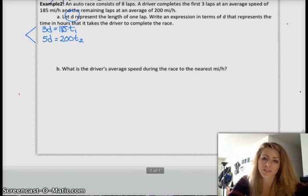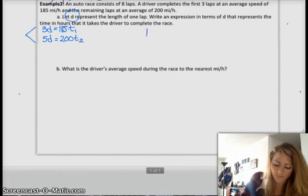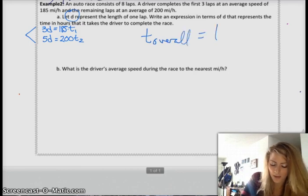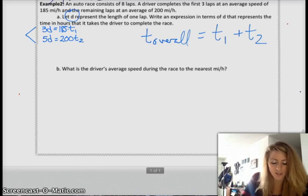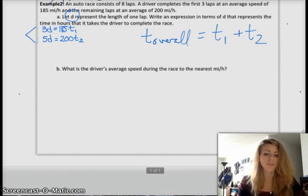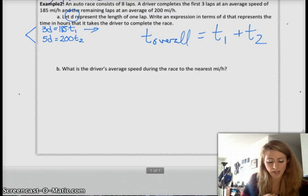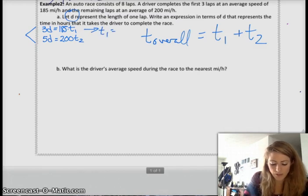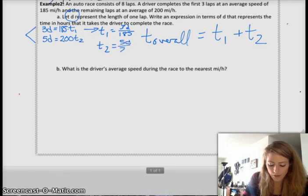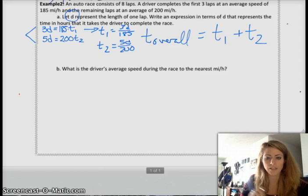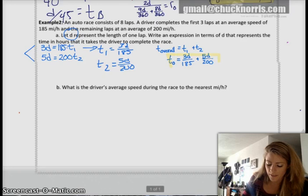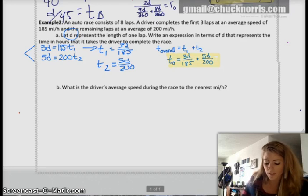So, that's our starting point. And then we said, it says we want an expression in terms of D that represents the time in hours that it takes the driver to complete the race. So, the time overall will be time 1 plus time 2, right? And so, I just want to, and they want it in terms of D, so I'm going to divide this first equation, I'm going to divide both sides by 185. And so, then I get T1 equals 3D over 185. And then I replace that, and I get T2 equals 5D over 200. And so, then we replace those in the other equation. So, I now have that my overall time is equal to 3D over 185 plus 5D over 200.